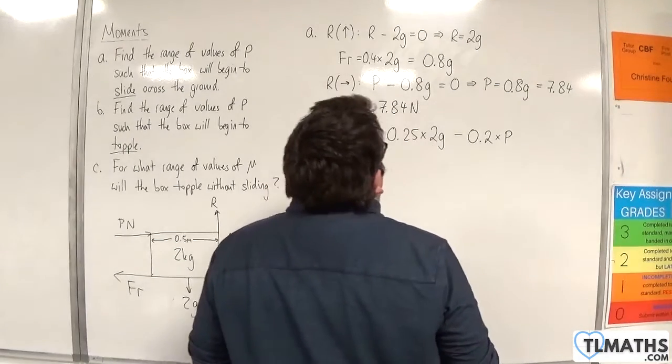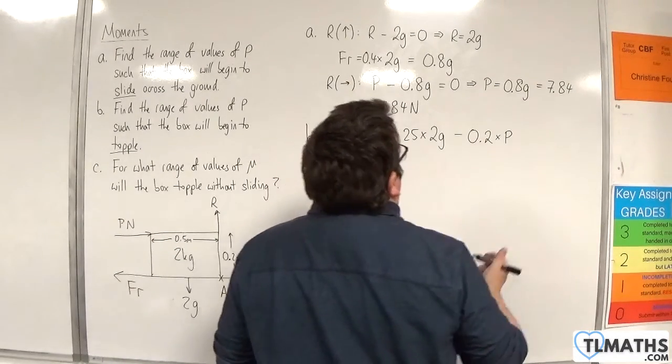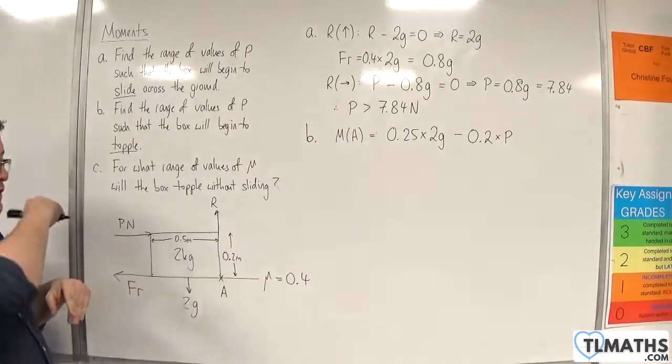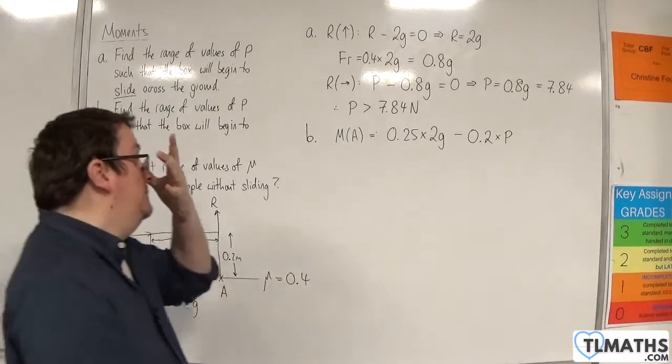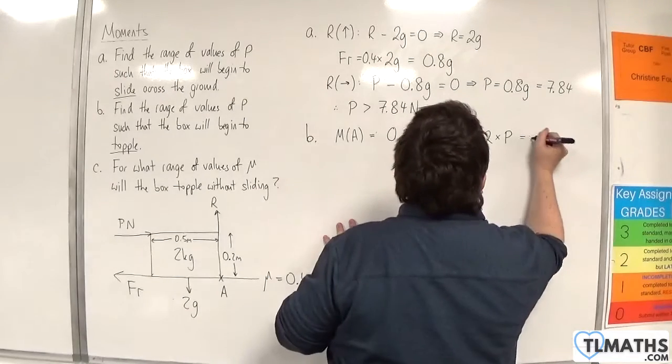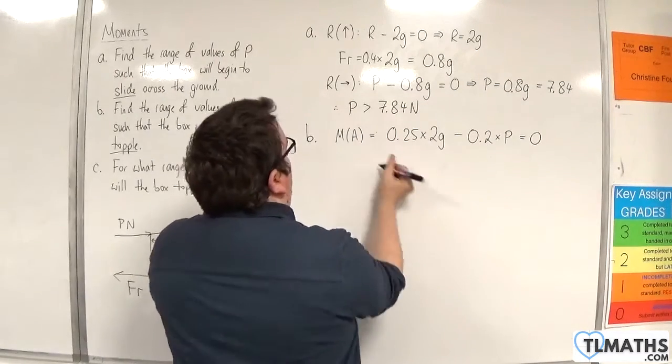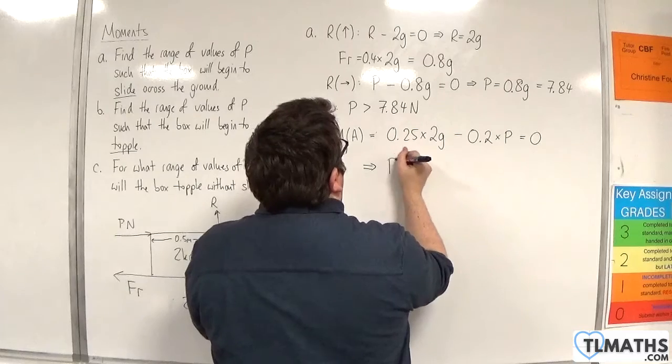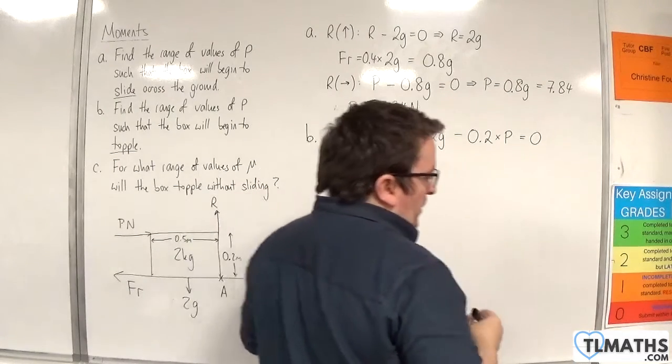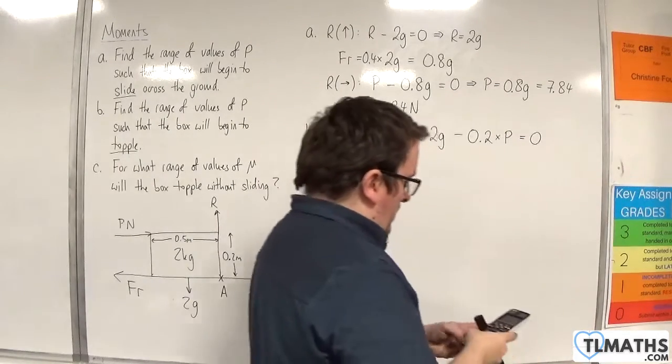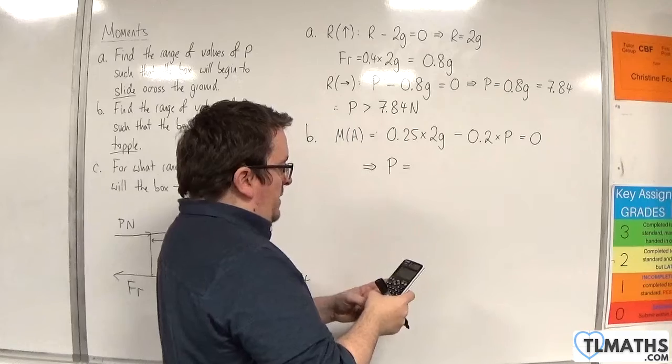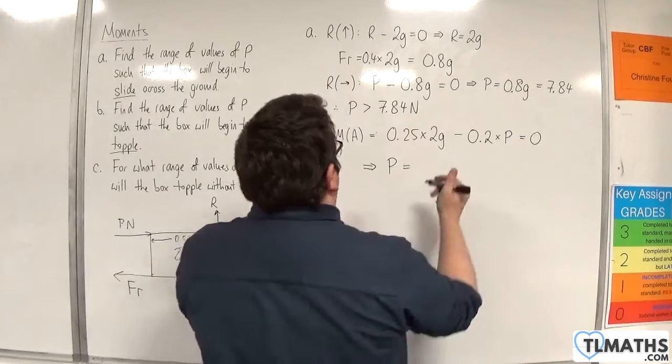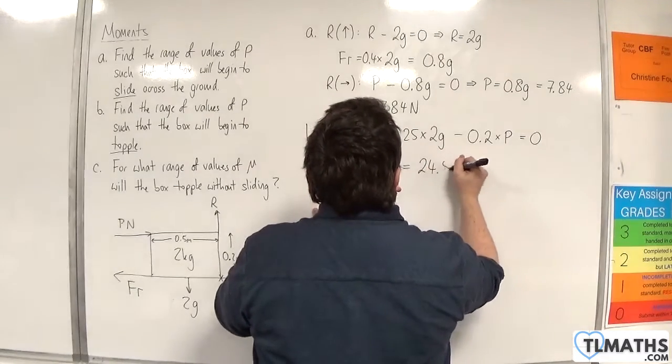If the total moment is going to be equal to 0, if it's not going to be rotating about that point, then I can put this equal to 0 and then solve it for p. So p is going to be equal to 0.25 times by 2 times by 9.8, and then divide that by 0.2, and we get 24.5 newtons.